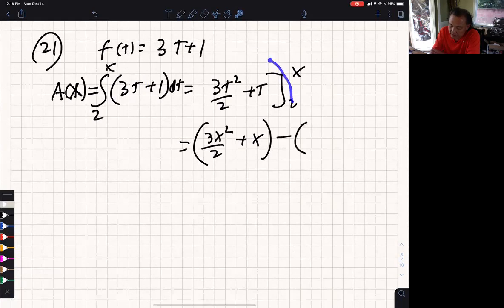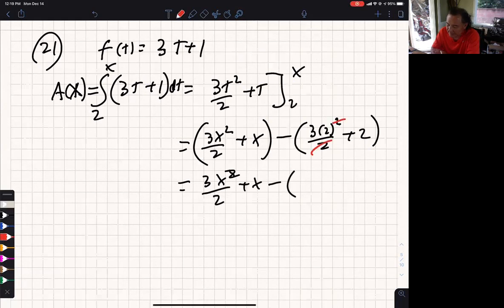So plug in 2 here and here. I'm going to get 3 times 2² over 2 plus 2. Now I just simplify everything. One of these 2's will cancel with one of those, leaving me 6. 6 plus 2 is 8. And I have my answer.